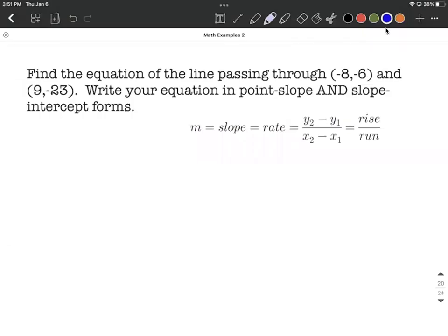Alright, we need to find the equation of a line where we're given two points initially. And we want to write our equation in both point-slope form and slope-intercept form.